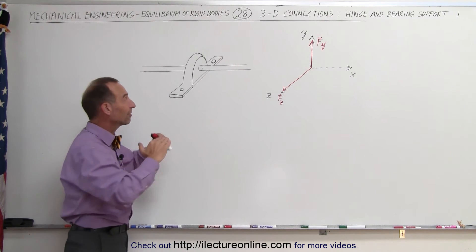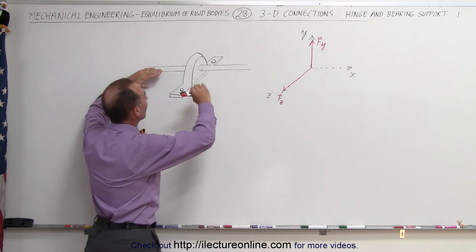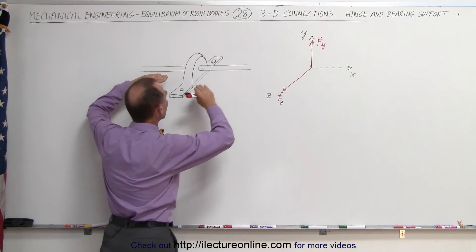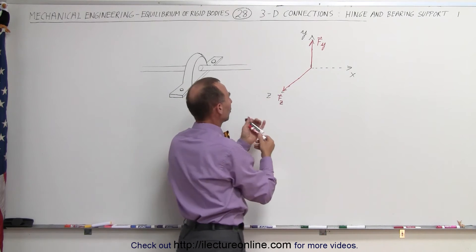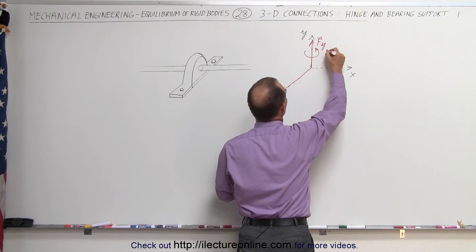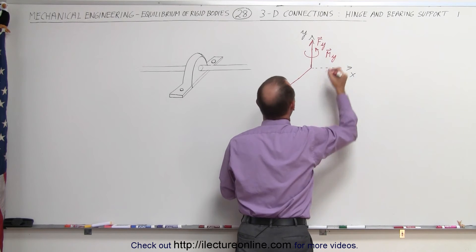Now since the shaft is inside the bearing support like that, you can see that the shaft cannot rotate in this direction. That creates a moment about the Y axis. So we have a moment in this direction, in the Y direction.